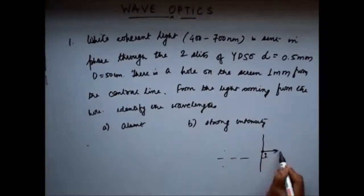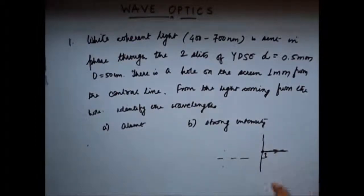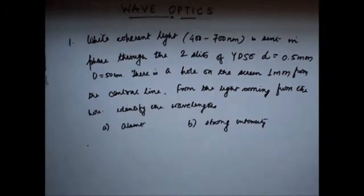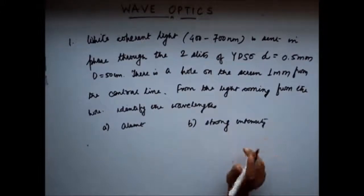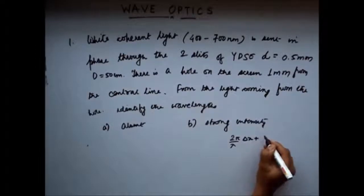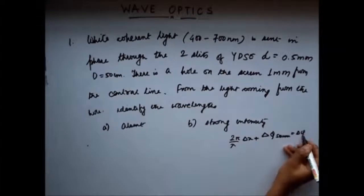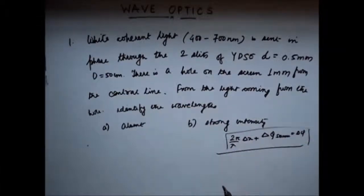The wavelengths which have destructive interference here we won't be able to see. So the question is to find which wavelengths are absent in the light coming out from here and which wavelengths have strong intensity. For any question on wave optics, you should remember the basic formula: (2π/λ)·Δx + Δφ_source = Δφ, the phase difference. In case of YDSE, Δx = xd/D.